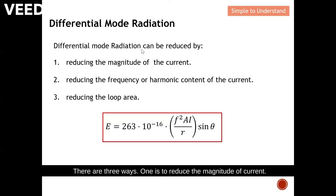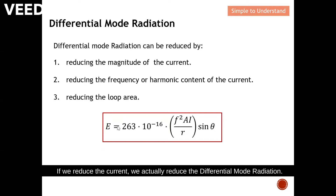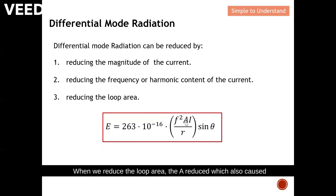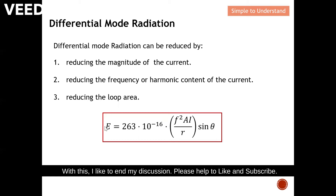In short, there are three ways to reduce differential mode radiation. First, reduce the magnitude of current — from the equation, reducing current reduces differential mode radiation. Second, reduce the frequency — reducing frequency also reduces the differential mode radiation. Third, reduce the loop area — reducing the loop area reduces the emission, which causes the differential mode radiation to decrease. With this, I'd like to end my discussion. Please help to like and subscribe. Thank you so much.